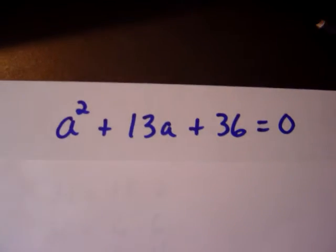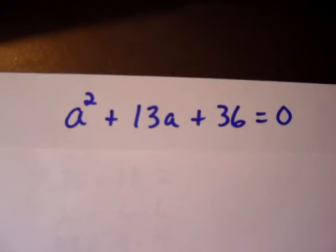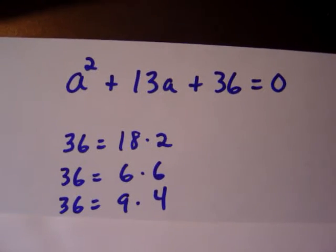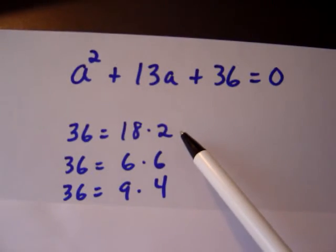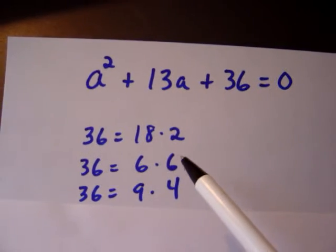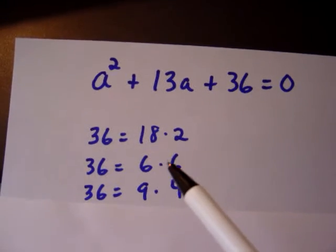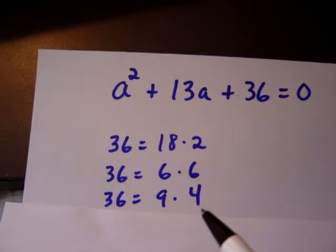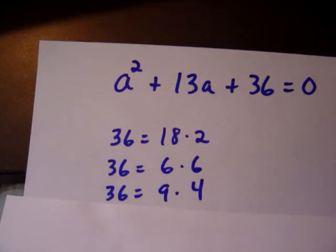We're thinking about what numbers multiply to give us 36 and add to give us 13. Perhaps it's easier to look at the factors of 36. 36 times 1 gives us 36, but there's no way we're going to get 13 from that. What about 18 times 2? That gives us 36, but 18 and 2 don't add to 13. 6 times 6 also gives us 36, but 6 and 6 add up to 12 — close, but that only counts in horseshoes and hand grenades. We want 13. What about 9 times 4? 9 times 4 gives us 36, and 9 plus 4 is 13. That's the solution here.